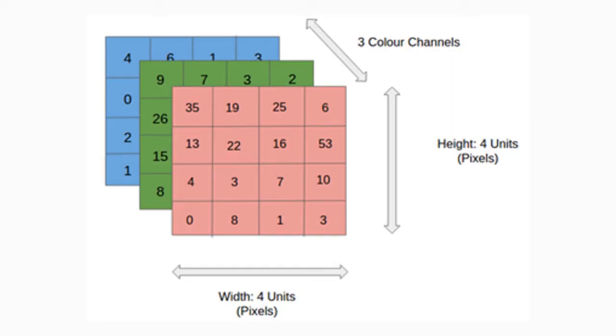Why? A neural network can capture the spatial and temporal dependencies of an image with the filters that it uses. It basically understands not only the pixel values but also the context of the image. The algorithm gets an input — as you can see on the screen — which is an RGB image with three color channels, a height of four units, and a width of four units; for example, four by four by three.